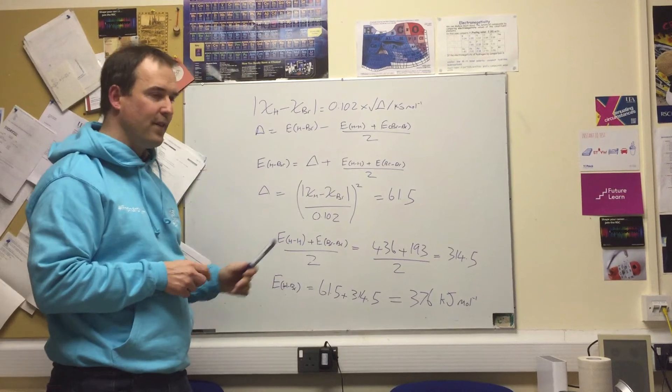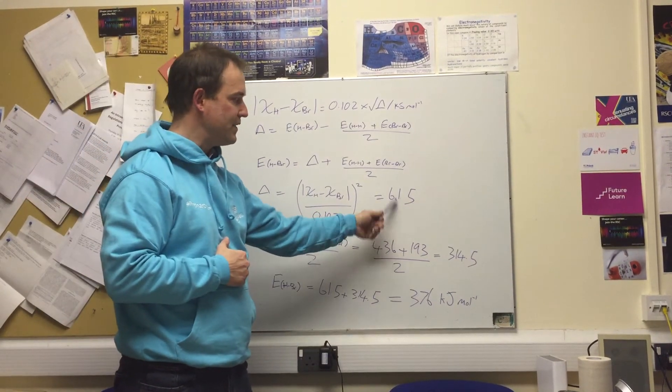7.8 squared is 61.5, so 61.5 is the ionic component.